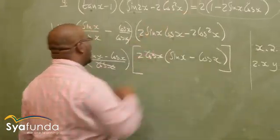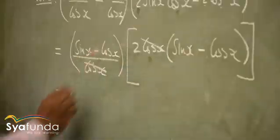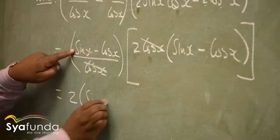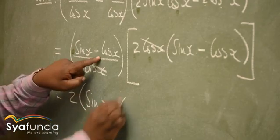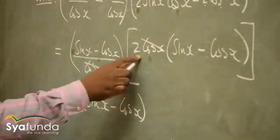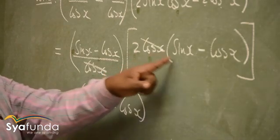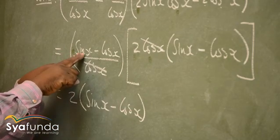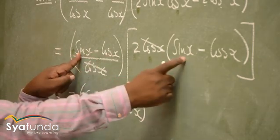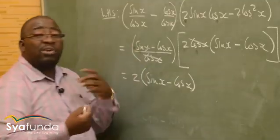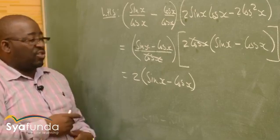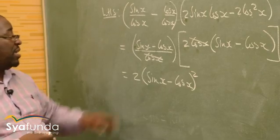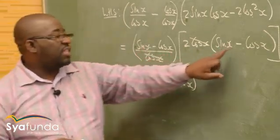We've got this 2, multiplied by sin x minus cos x, and also multiplied by sin x minus cos x. Because I see that I've got sin x minus cos x and sin x minus cos x — it's the same thing — so this is squared: (sin x minus cos x) squared.